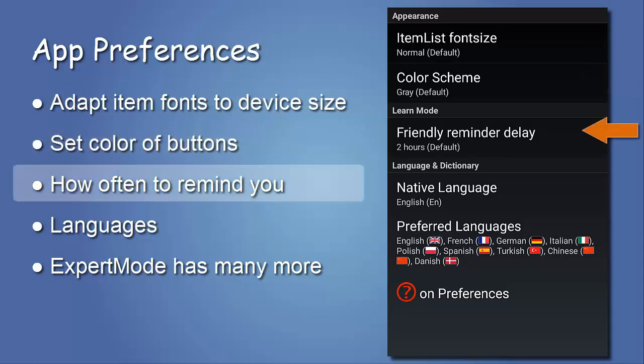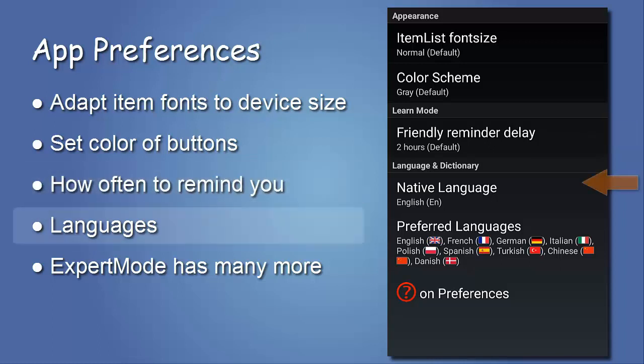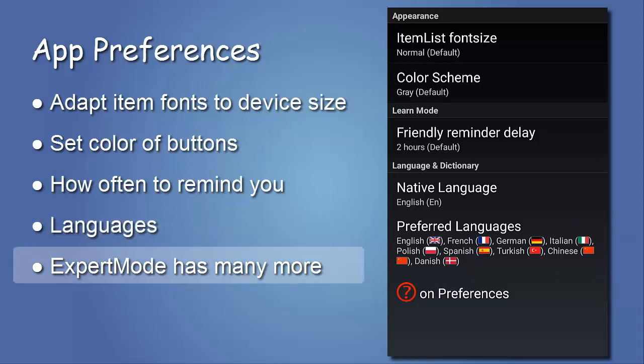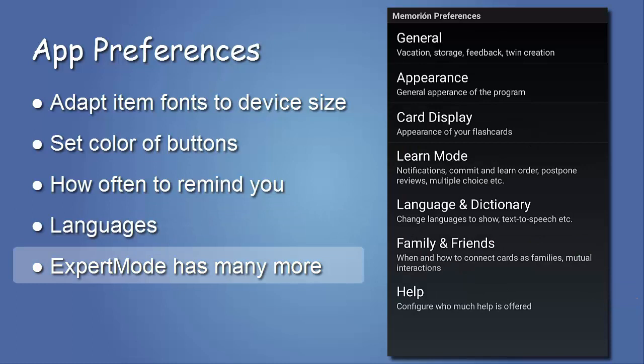Here you can find the right balance between being reminded as needed and not being annoying. The native language gets special treatment, for example for dictionaries and text-to-speech. The preferred languages show up first in language selections. The question mark gives you specific help — also use it when exploring the many more settings as an expert.